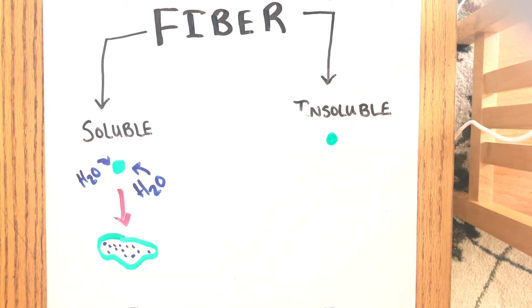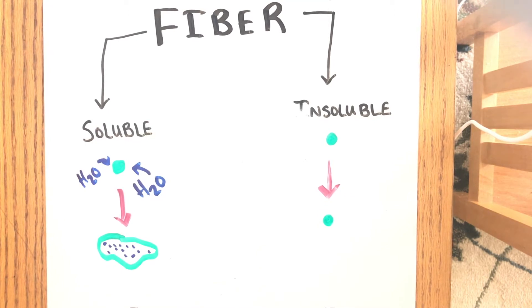Insoluble fiber does not absorb water and goes through your digestive system without changing. It bulks your stool which helps prevent constipation. It is important to get both types of fiber in your diet.